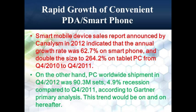First, let's talk about why a mobile control system is important. Between Q4 2010 and Q4 2011, smartphone sales grew at a rate of 62.7%. Also, tablet PC sales grew by 264.2% during the same period. On the other hand, worldwide shipment of PCs during Q4 2012 declined 4.9% when compared to the same period of the previous year.